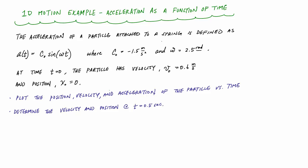We're going to have a particle attached to a spring. It has an acceleration defined by the function a(t) = some constant times sine(ωt). We're given that at time t = 0, the initial velocity v₀ = 0.6 meters per second, and the initial position x₀ = 0. What we want to do is plot the position, velocity, and acceleration of the particle versus time to visualize what is happening.